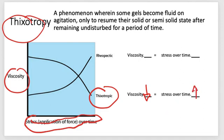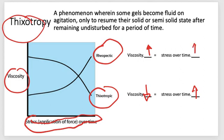On the other hand, we also have another type of behavior of gels called rheopectic behavior. For rheopectic behavior, the viscosity increases with stress over time. Rheopectic liquids increase in viscosity as there is an increase of stress over time.